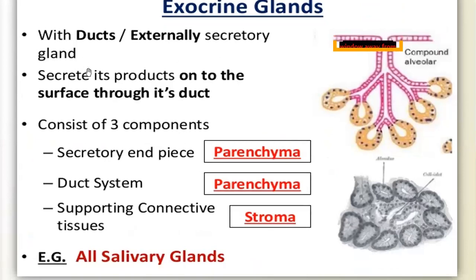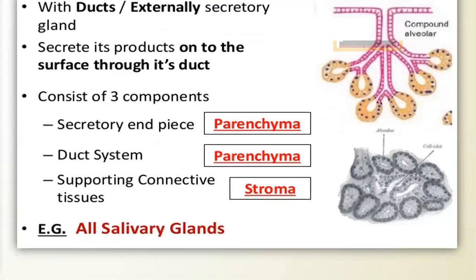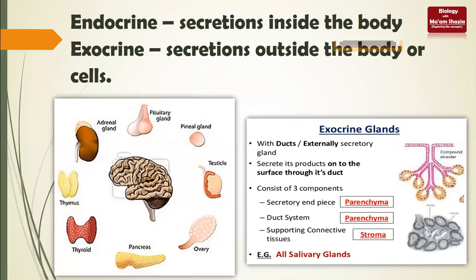Secretions from exocrine glands go through the duct system to the target area. An exocrine gland has three components: the secretory unit, the duct system, and supportive connective tissue. Salivary glands are also an example of ducted glands. That concludes our exocrine and endocrine comparison. Now let's focus on the endocrine gland system, which is our main target.